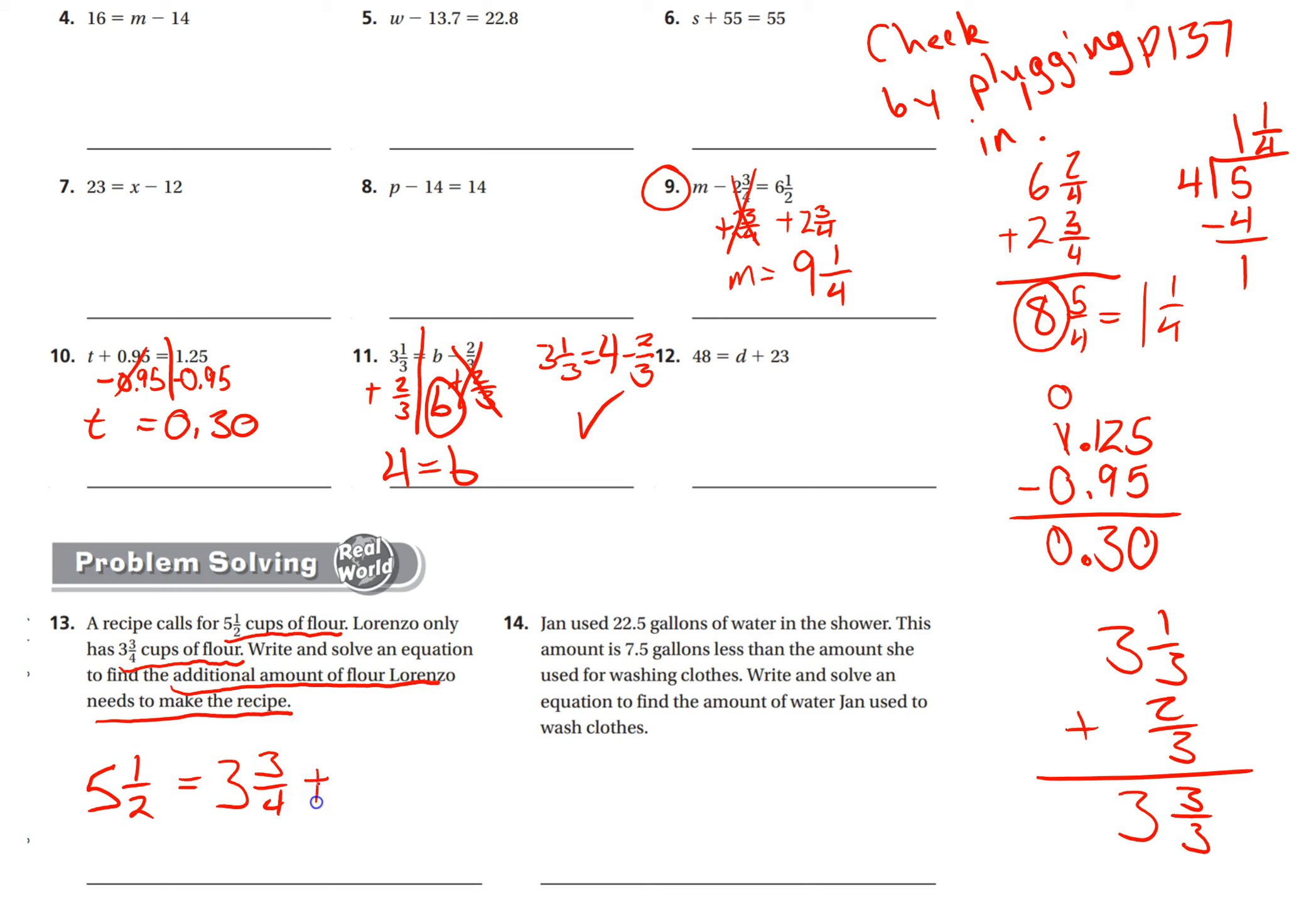So we need to know the additional amount. We can use any variable we want. Let's use n for just number this time. And now we got to do inverse operations. So three and three-fourths—if there's no sign in front of it, it's an implied addition—it's a positive three and three-fourths. So we have to subtract three and three-fourths from this side, and then subtract three and three-fourths from this side. That'll leave us with just n, and then once you do this math, this will be what n equals. I'll let you do that subtraction on your own.